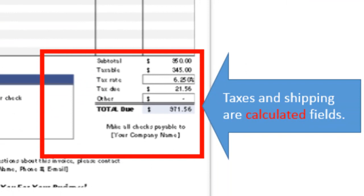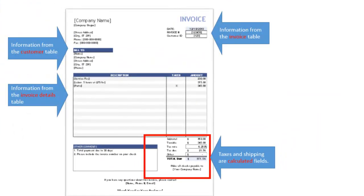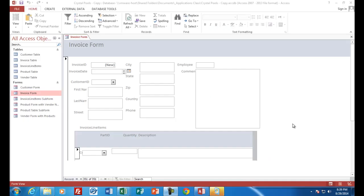At the bottom of the invoice, there are not actually tables — these are calculated fields. We'll use formulas to calculate the tax and the shipping. That covers the information about what we'll design next in the invoice.